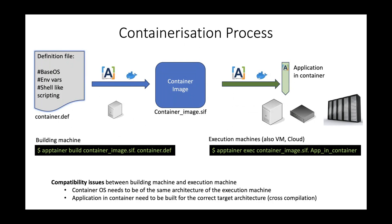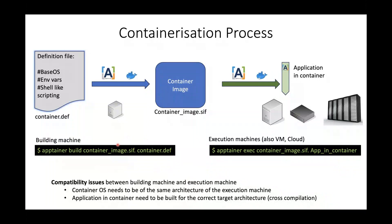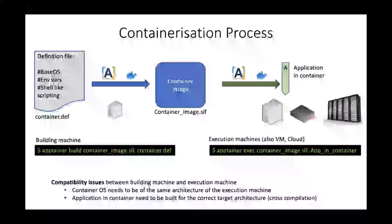The basic process to create a container is straightforward. You work on your building machine and create a simple text file where you specify what you would do on a shell — defining variables and instructions to build and compile your application. Inside this file, you declare the base Linux distribution you want to use. The instruction is as simple as running 'apptainer build' with the name of the image and the source definition file. Once you create this image, you can run it on any platform that has Apptainer or Singularity as a container engine.